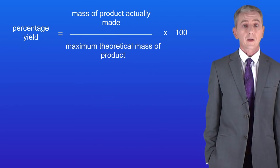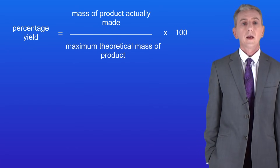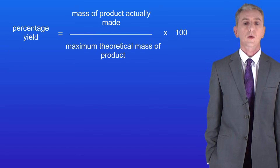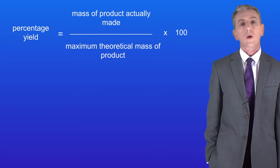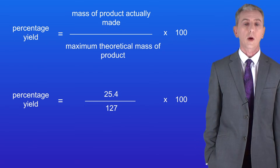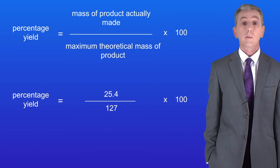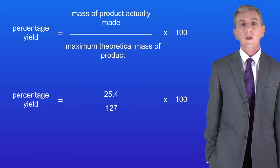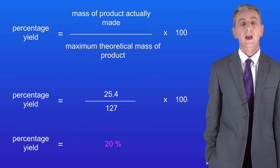The percentage yield is the mass of the product actually made divided by the maximum theoretical mass of product multiplied by a hundred. The question tells us that we've actually made 25.4 grams of copper, and the maximum theoretical mass is 127 grams. Putting these numbers into the equation gives us a percentage yield of 20 percent.